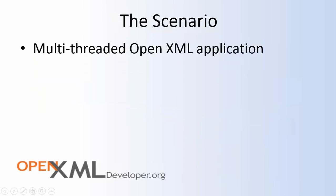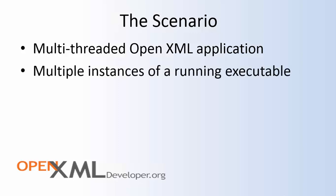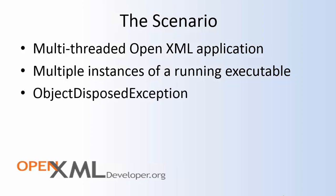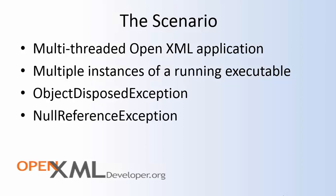The scenario we're talking about is multi-threaded OpenXML applications. This situation with object-disposed exceptions can also occur when you have multiple instances of a particular running executable accessing OpenXML documents simultaneously — you can get an object-disposed exception. Alternatively, if you change your coding pattern, it's possible that you get null reference exceptions. These exceptions are thrown from deep within system.io.packaging. In this screencast, I'm going to explain why we get these exceptions and how to mitigate and solve the problem.